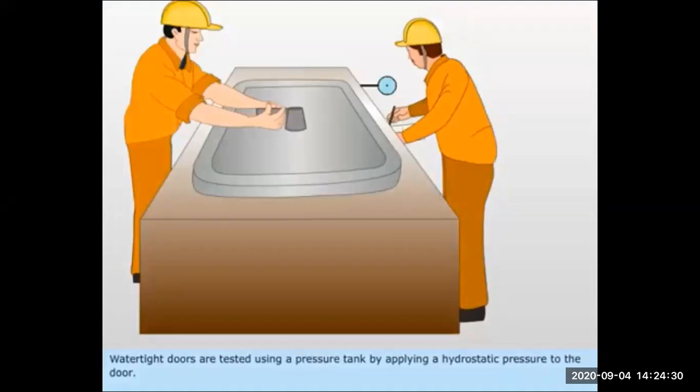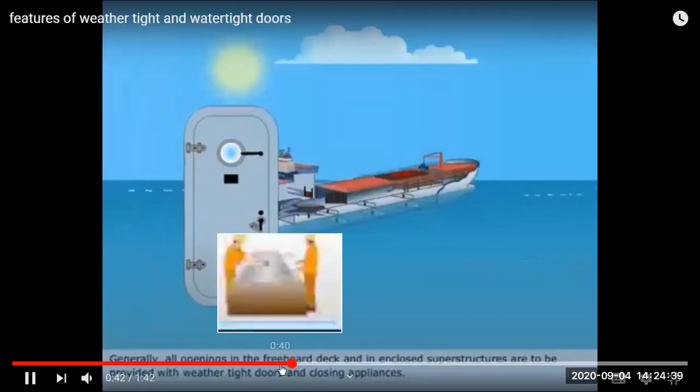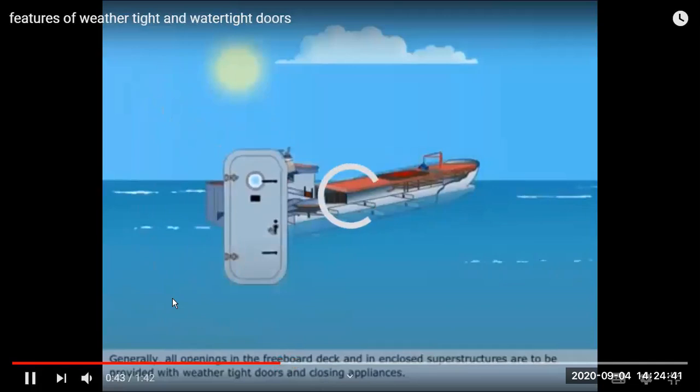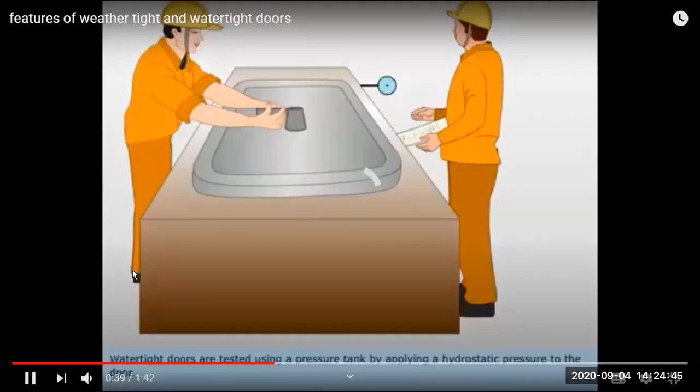Water tight doors are below the water line, so they are exposed to a lot of pressure from the height of water. They are tested by putting them in a tank and kept up to 15 meters of water height. They are tested so that in case of any problem, water is not entering from one compartment to another compartment.